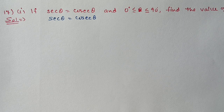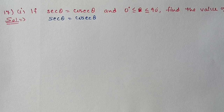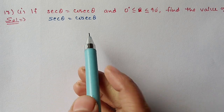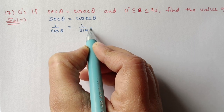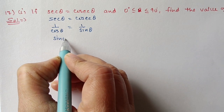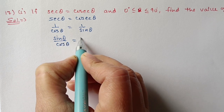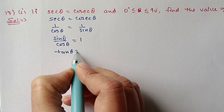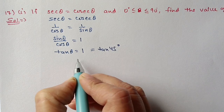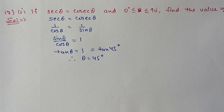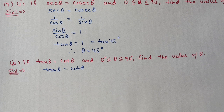Question 17, first part: If sec theta equals cosec theta and theta is between 0 and 90, find the value of theta. We write sec theta as 1 upon cos theta and cosec theta as 1 upon sin theta. Shifting sin theta across gives sin theta upon cos theta equals 1. Since sin by cos equals tan, tan theta equals 1. The value 1 corresponds to tan 45 degrees, so theta equals 45 degrees.